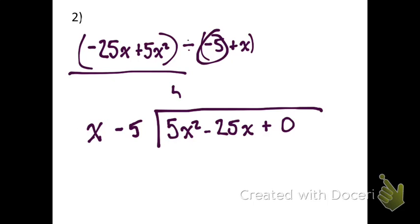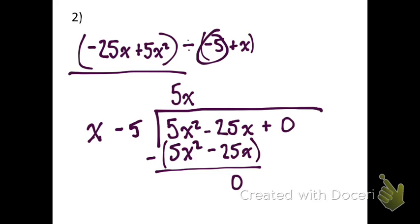5x times x is 5x squared. 5x times negative 5 is negative 25x. Subtract. This is the same expression as above, less the plus zero. So when I do that, I get zero. And if I bring down a zero again, there's no remainder really. When the remainder is zero, you're done. So the answer to this example is 5x.